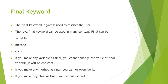To summarize: the final keyword is used to restrict the user. We use it in three places. With a variable — you cannot change its value. With a method — you cannot override it. With a class — you cannot extend or inherit it. Those are the three uses of the final keyword.